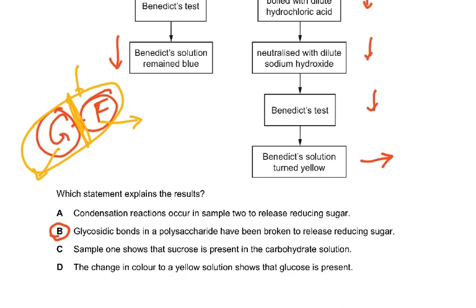Why are the other options wrong? Option C: 'sample one shows sucrose is present' — no, sucrose with Benedict's is negative because sucrose is a disaccharide, not a reducing sugar. Option D: 'the color change to yellow shows glucose is present' — no, the color appeared after HCl was added, and any reducing sugar could produce that result. Fructose is also a reducing sugar, so we cannot say glucose is the only reducing sugar present.